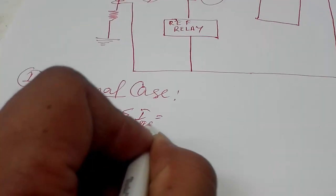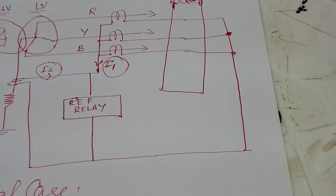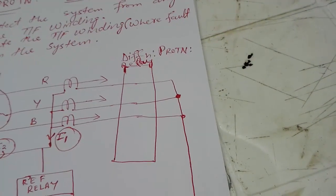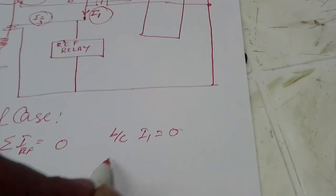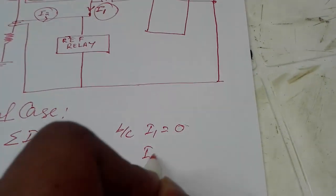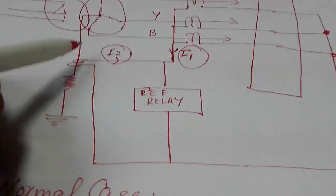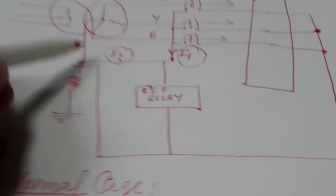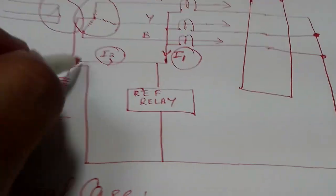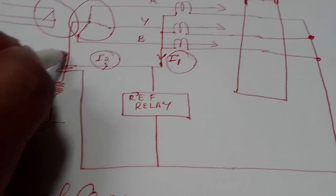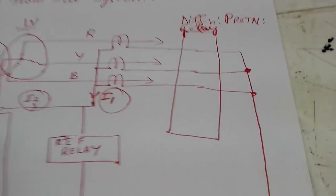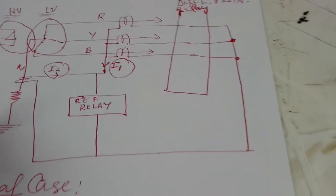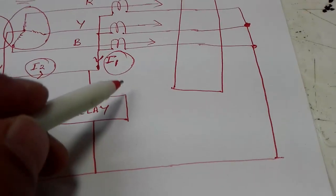I1 and I2 will both be equal to zero in normal condition. There will be no flow of current in the neutral during normal condition, so I2 will also be equal to zero. I1 is the summation of the phase currents.